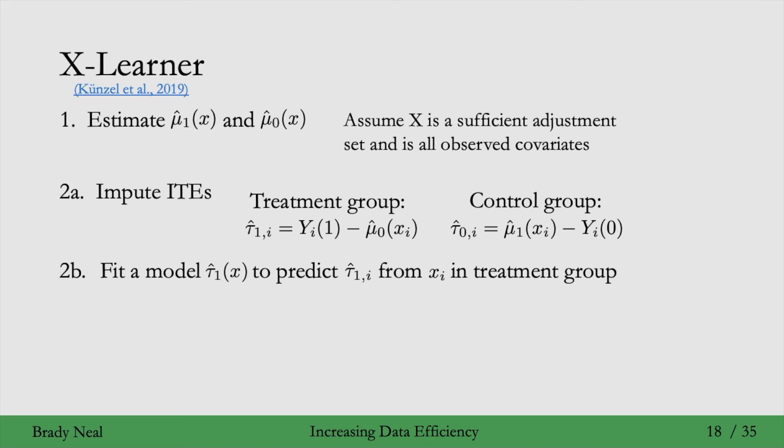Tau1 hat will give us estimates for all of the different data points. X can be any X here, whereas in step 2A, we only got estimates for the treatment group data with tau1 i hat.